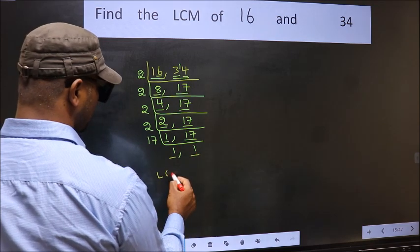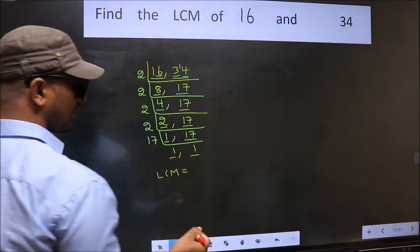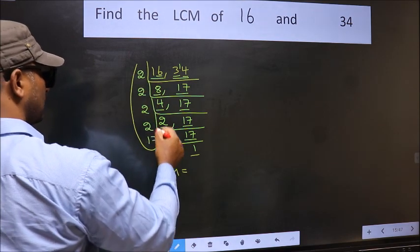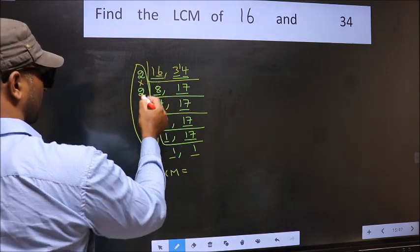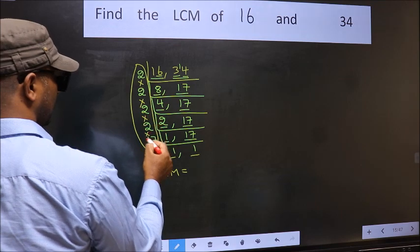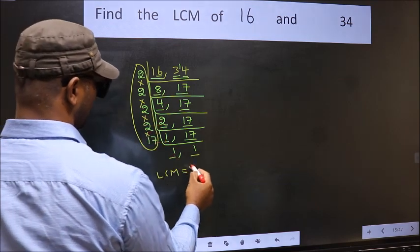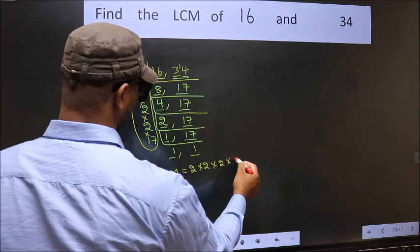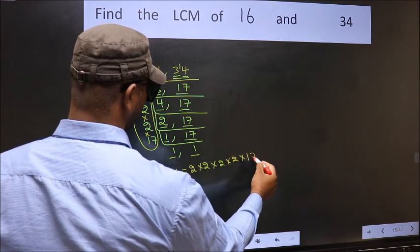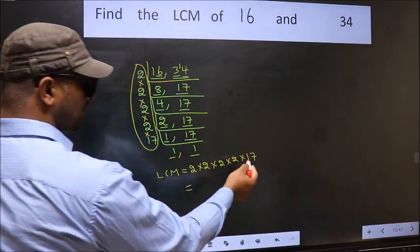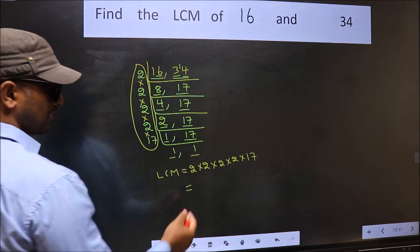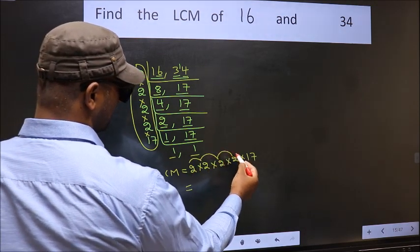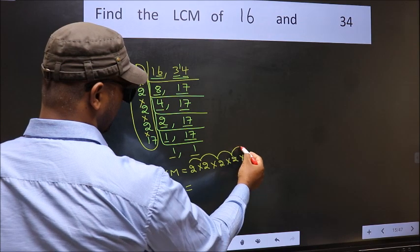So our LCM is the product of these numbers. That is 2 into 2 into 2 into 2 into 17. Let us multiply these numbers: 2 into 2 is 4, into 2 is 8, into 2 is 16, into 17.